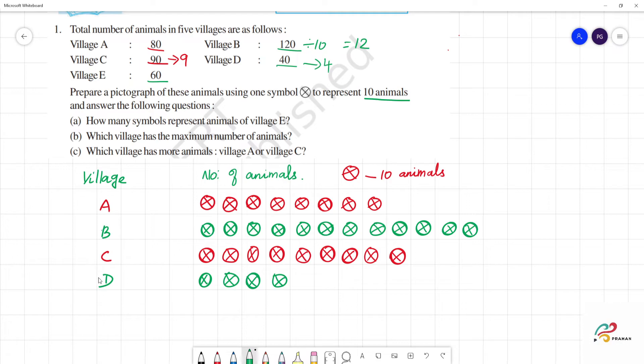Now, village E, how many animals are there? 60. 60 is how many pictures? 6 pictures. So, 1, 2, 3, 4, 5, 6.